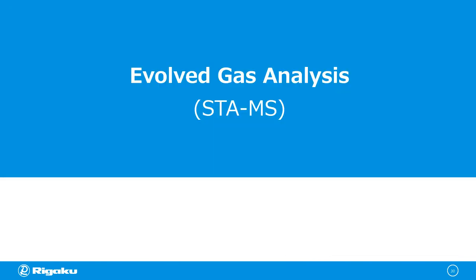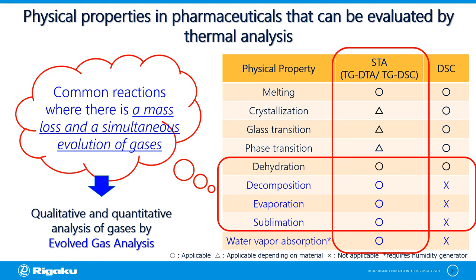From this slide onwards, we will be talking about evolved gas analysis or EGA. The reactions in pharmaceuticals commonly evaluated by thermal analysis include dehydration, evaporation, decomposition, and sublimation or combustion — common reactions where there is a mass loss. If there is a mass loss, then there is a simultaneous evolution of gases. Using the evolved gas analysis or EGA method, we are able to qualitatively and quantitatively analyze evolved gases, understanding the kind of gases as well as their evolution behavior.